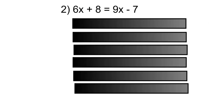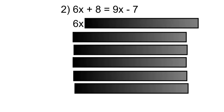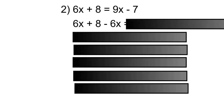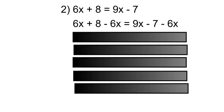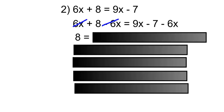In question number two, there are no like terms on each side of the equation, therefore we'll move to step two. Remove 6x from both sides by subtracting 6x. So 6x plus 8 minus 6x equals 9x minus 7 minus 6x. Positive 6x and negative 6x will cancel, leaving us with 8.